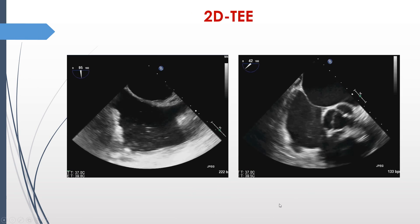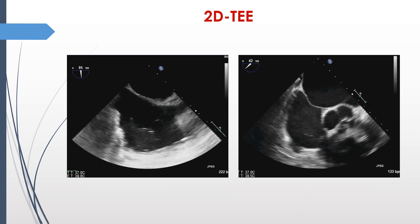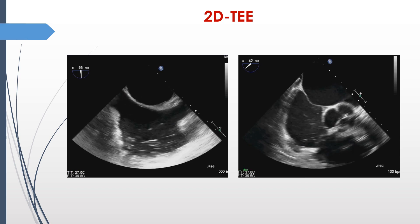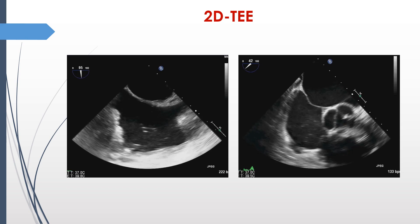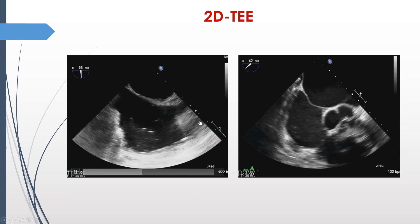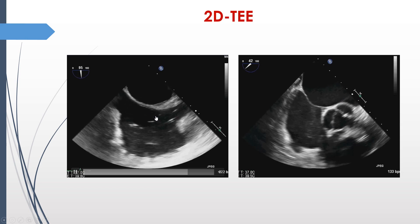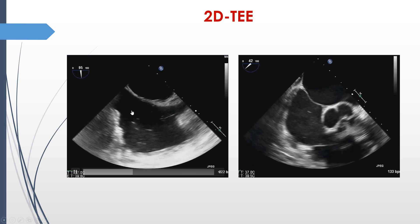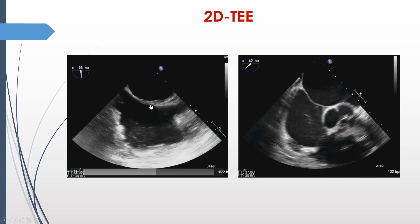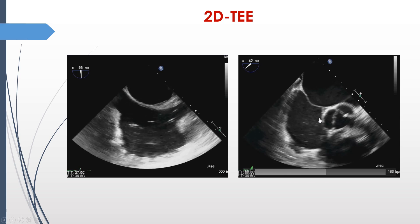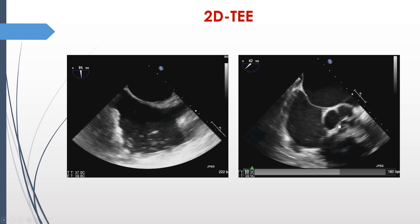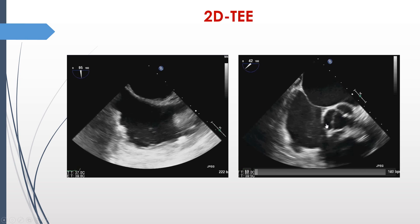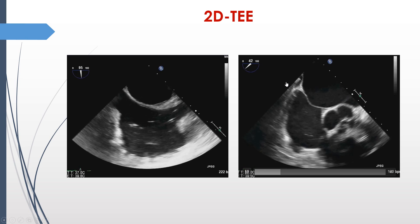If you are using only two-dimensional TEE, you have two basic views to start with when imaging the septum or guiding transseptal puncture or septal crossing. You have the bicaval view, which is at around 90 degrees, showing what is superior and what is inferior — here is the superior vena cava, inferior vena cava, left atrium, and right atrium. And you have the short axis base view, which usually shows you the anterior-posterior relationship once you see the aortic valve — so this is anterior and this is posterior.